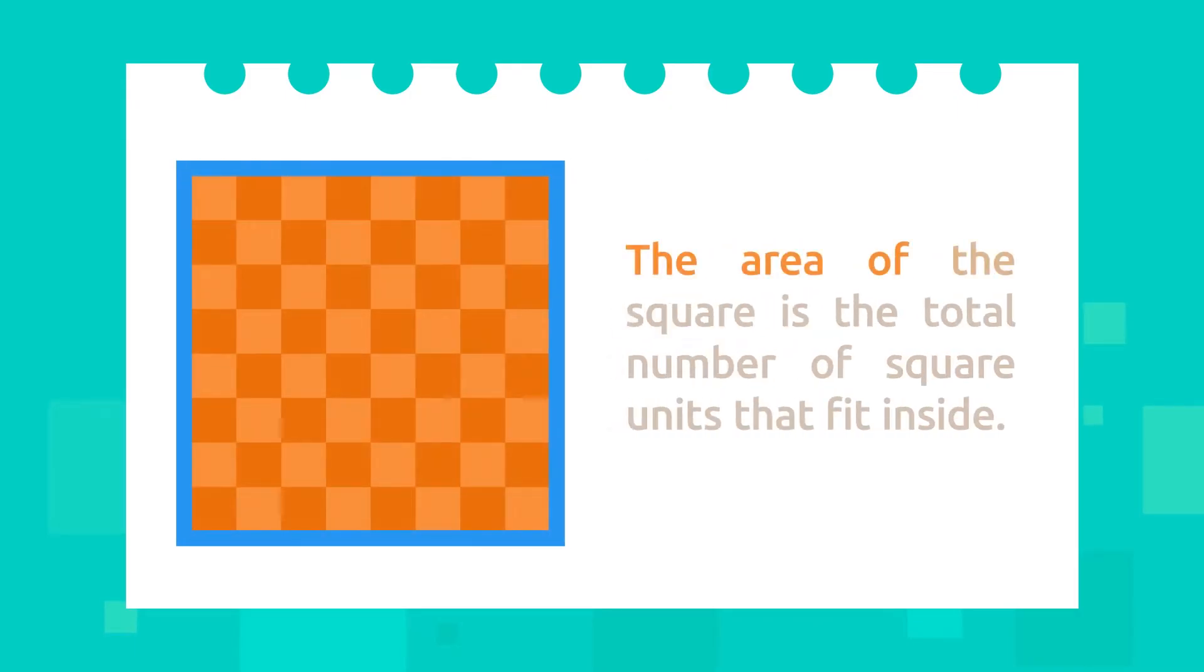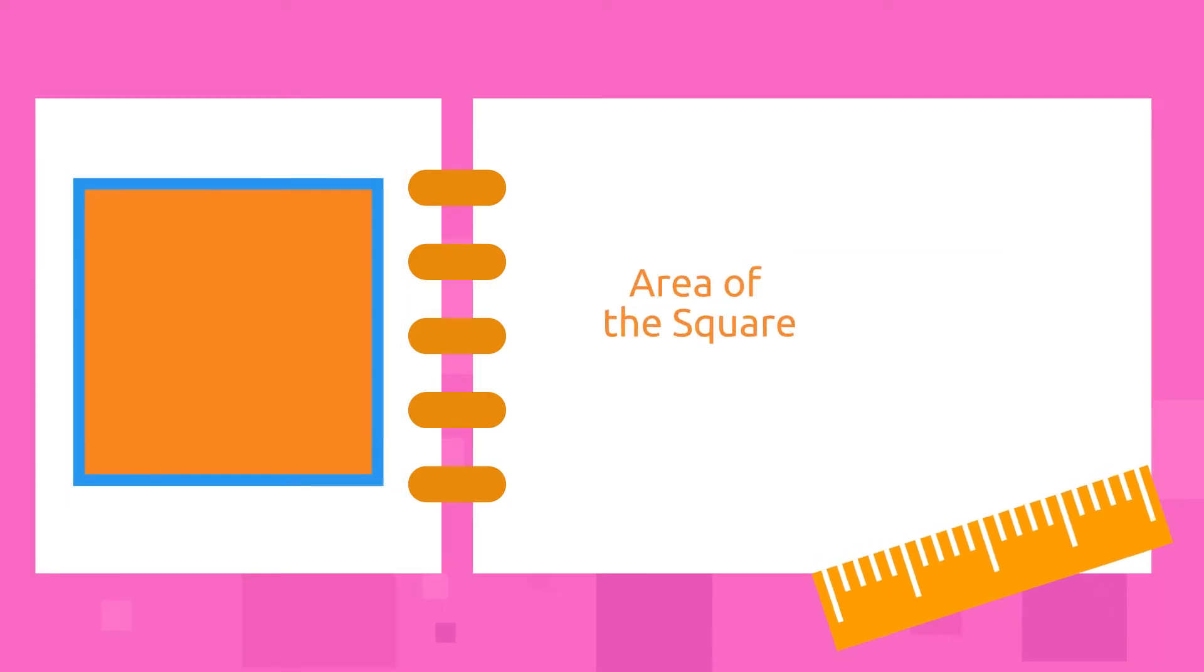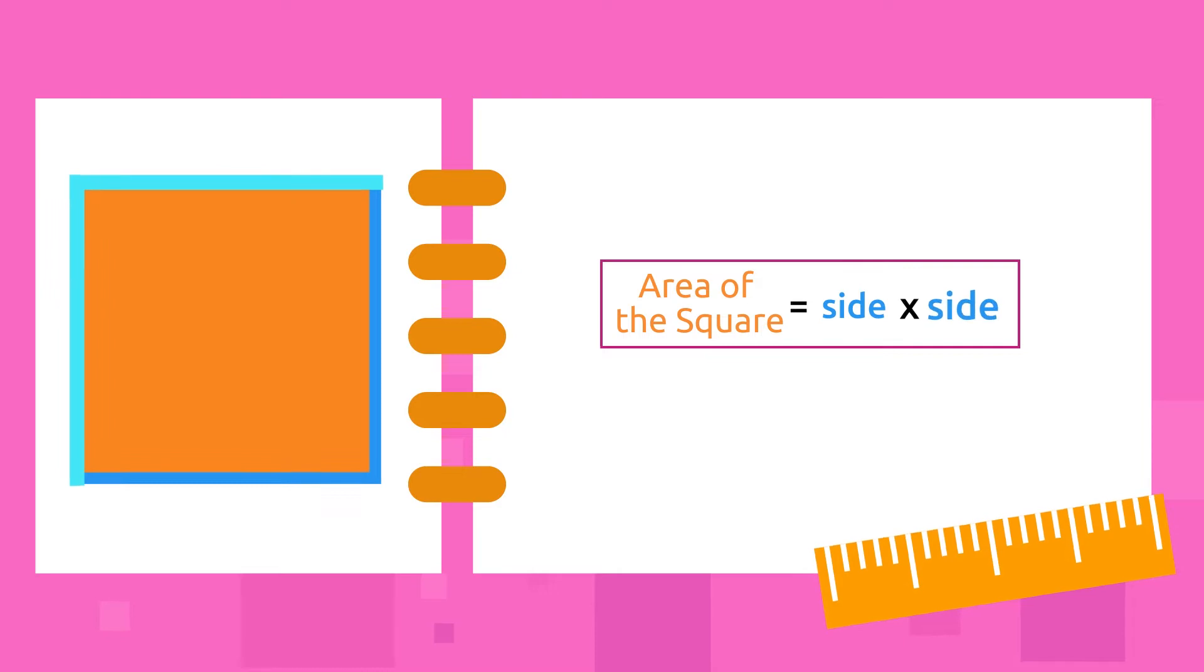To calculate the area of the square, we should use the following formula: the area of the square is equal to multiplying one side by another.